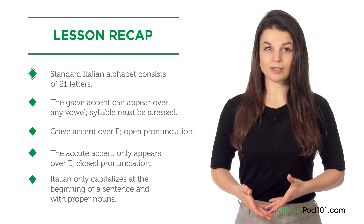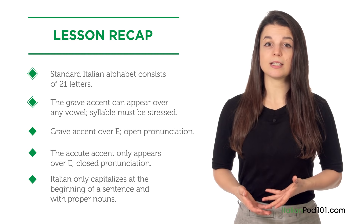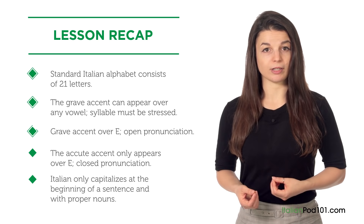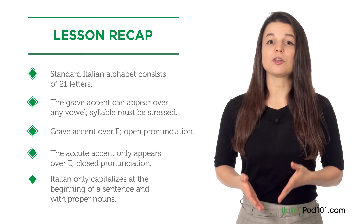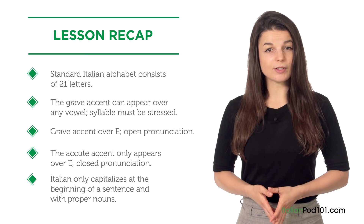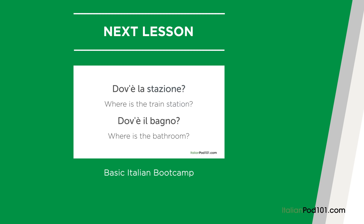Let's wrap up this lesson by recapping what we've learned. You learned that the standard Italian alphabet consists of 21 letters. You also learned that the grave accent can appear over any vowel at the end of a word, and is used to indicate that the syllable must be stressed. When the grave accent appears on the letter E, you must use an open pronunciation. When the acute accent is used, it'll only appear over the letter E, indicating that you must use a closed pronunciation. Finally, Italian only uses capitalization at the beginning of a sentence and with proper nouns.